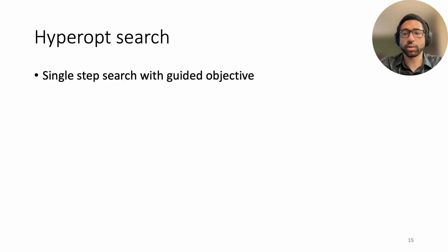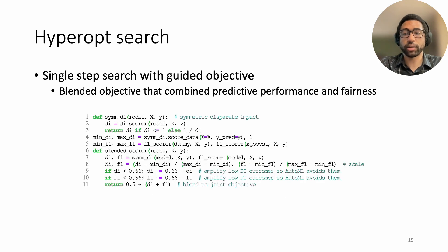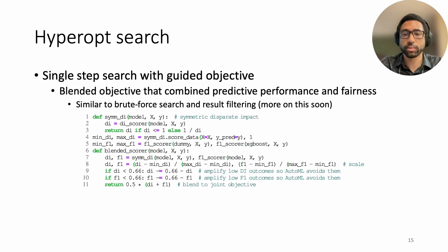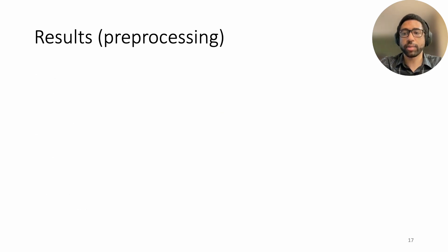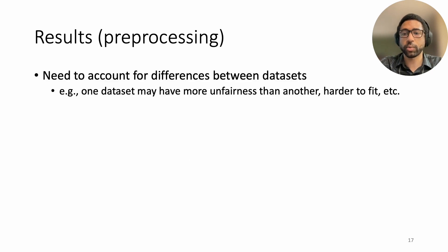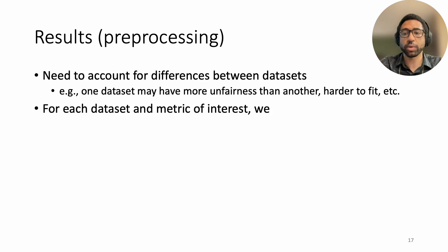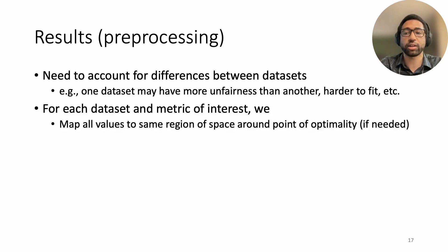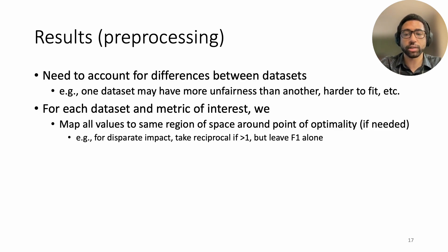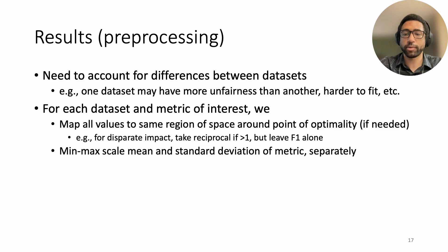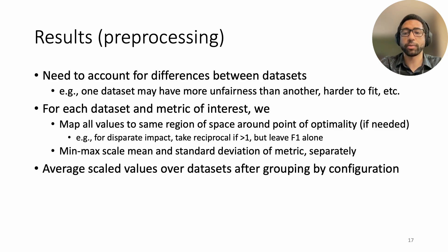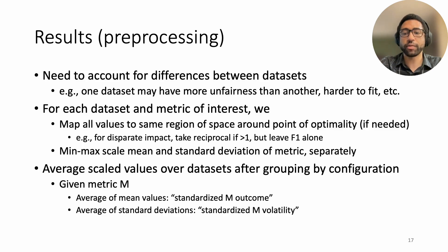Our automated search via hyperopt involved only a single step with a guided objective. This objective used a blended score that combined predictive performance and fairness, defined to emulate parts of the brute force search and result analysis. Before interpreting our calculated metrics, we realized we needed to account for differences between datasets. For instance, one dataset having more inherent unfairness or being harder to fit than another could confound certain results. Therefore, for each dataset and metric of interest, we first map all result values to the same region of space around the point of optimality if necessary. This means for disparate impact, we calculate the reciprocal of any ratios larger than 1, but since F1 is bounded between 0 and 1, we leave F1 results alone. We then min-max scale the mean and standard deviation results, again per dataset. Lastly, we average scaled values over datasets after grouping by model configurations. Given a metric M, we refer to the average of mean values as a standardized M outcome and the average of standard deviations as a standardized M volatility.